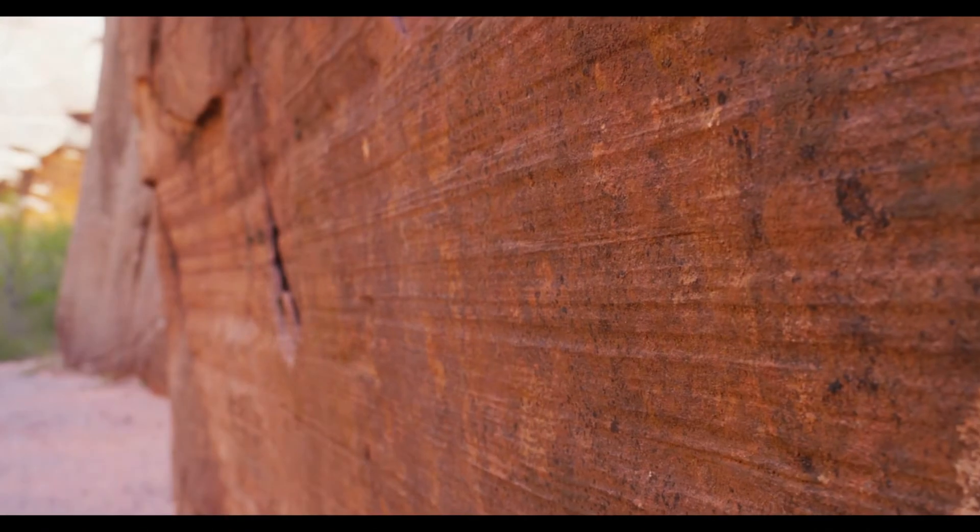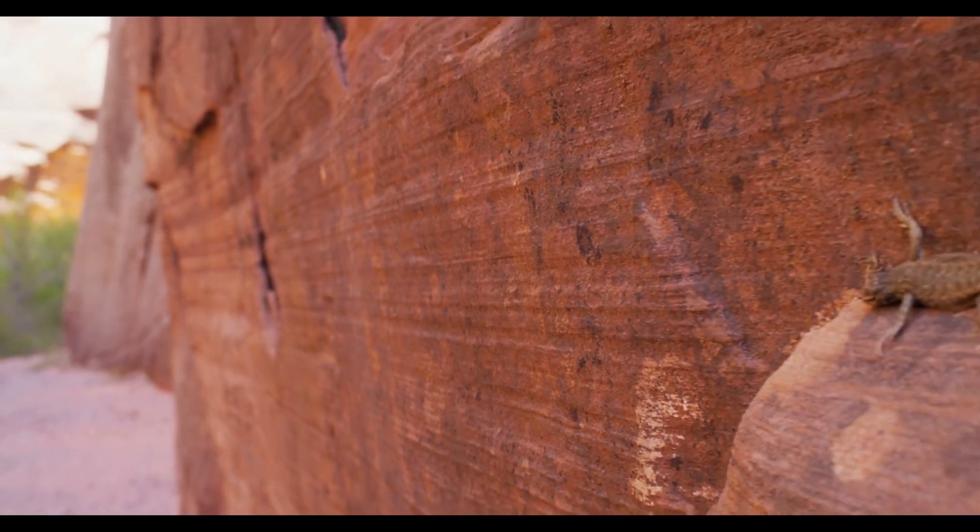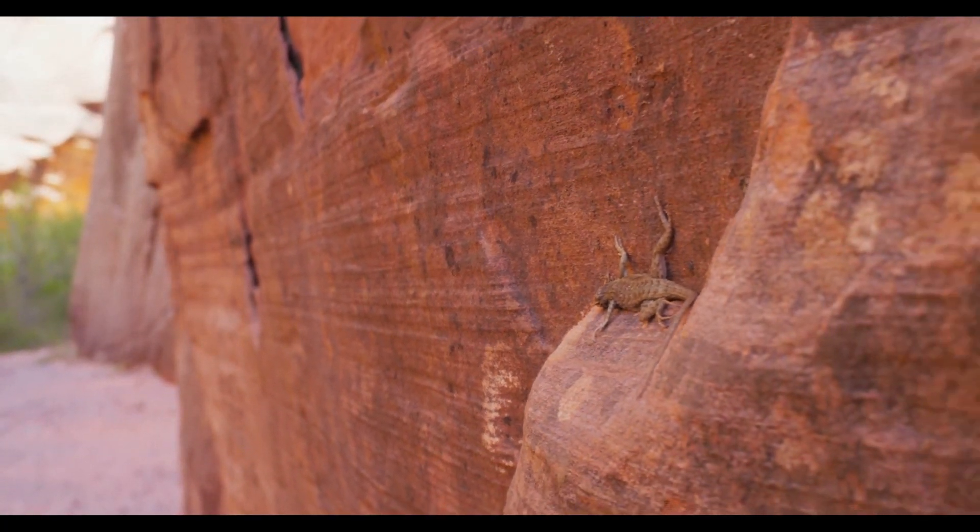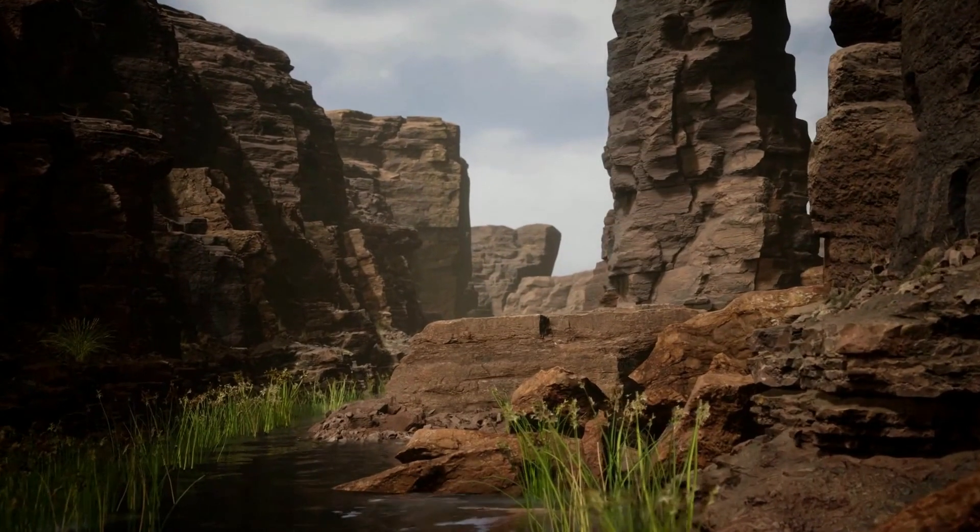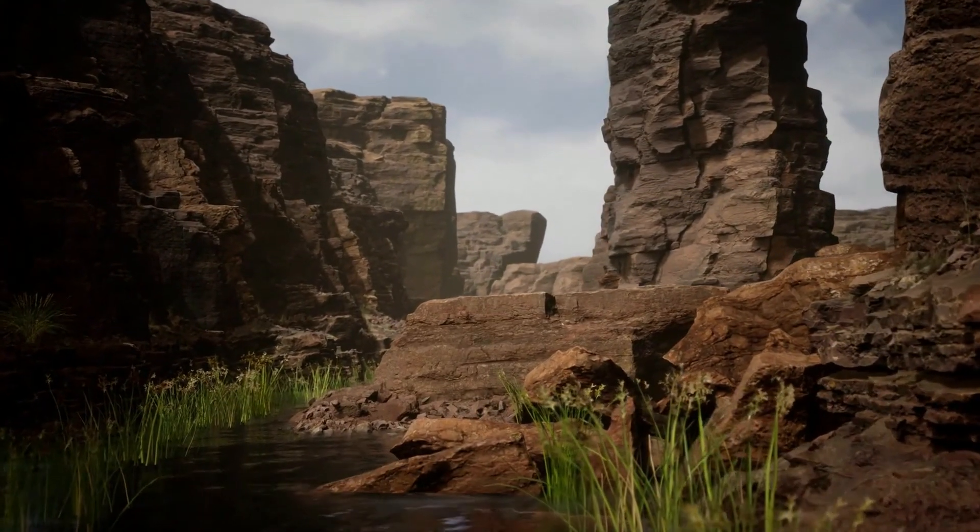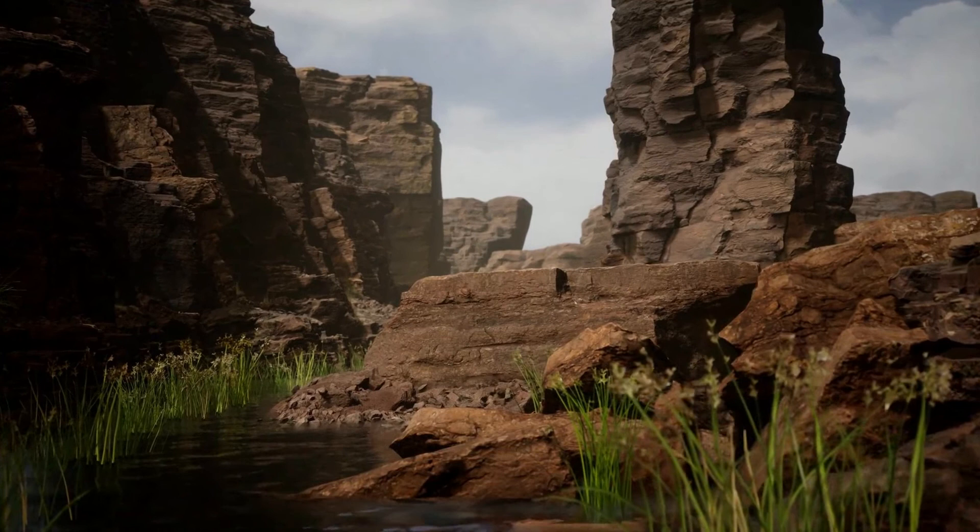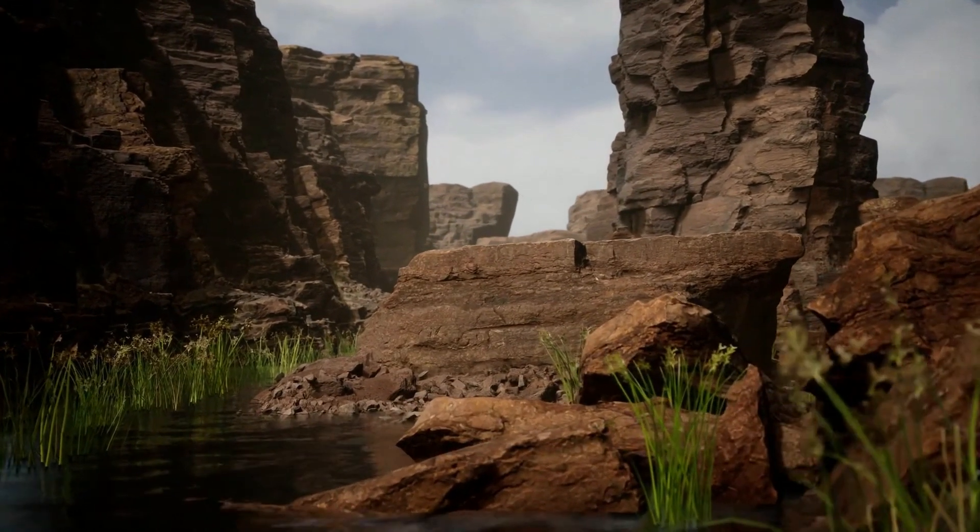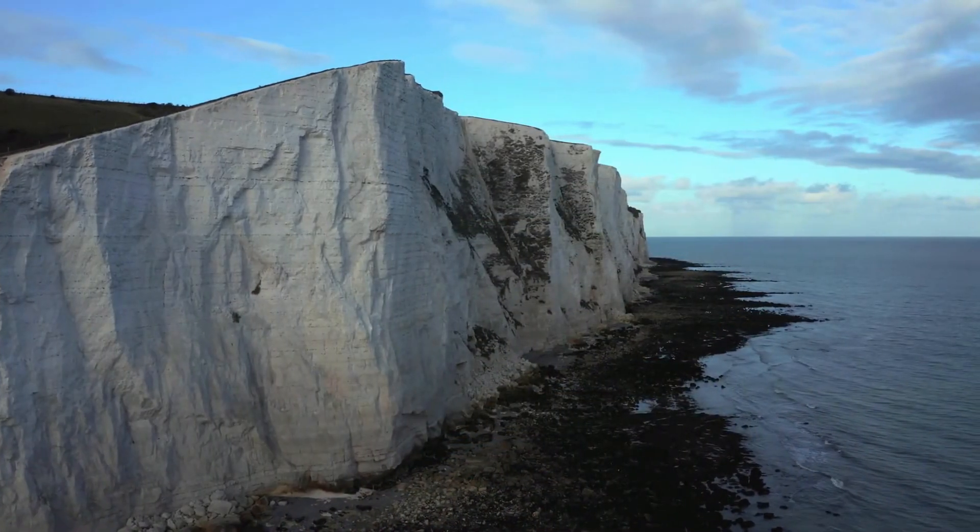Sedimentary rocks are formed from pre-existing rocks or pieces of once-living organisms. They form from deposits that accumulate on the earth's surface or under the ocean. The particles that form a sedimentary rock are called the sediment and can be composed of minerals or organic material.